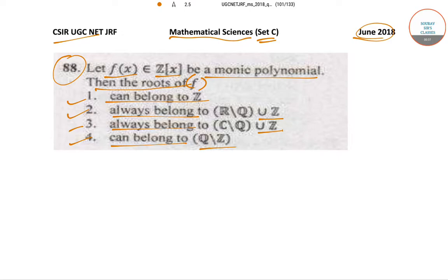Let's start solving. Let A be a rational root of f(x) over Z. This implies that A belongs to Z. Therefore, if A belongs to Z, then we can say that option 1 is true.